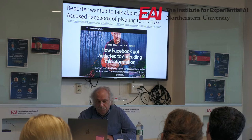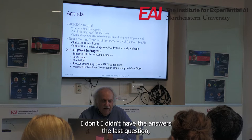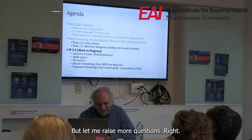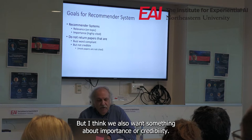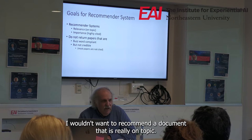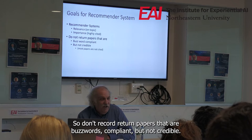Let me move on to what I refer to as IR 3.0. This is work in progress — I don't have answers to the last question, I don't have answers to this one either, but let me raise some more questions. I'd like to build a recommender system. Most recommender systems really think about relevance, but I think we also want something about importance or credibility. I wouldn't want to recommend a document that is really on topic if the only problem is that it's misinformation. Don't return papers that are buzzword-compliant but not credible.